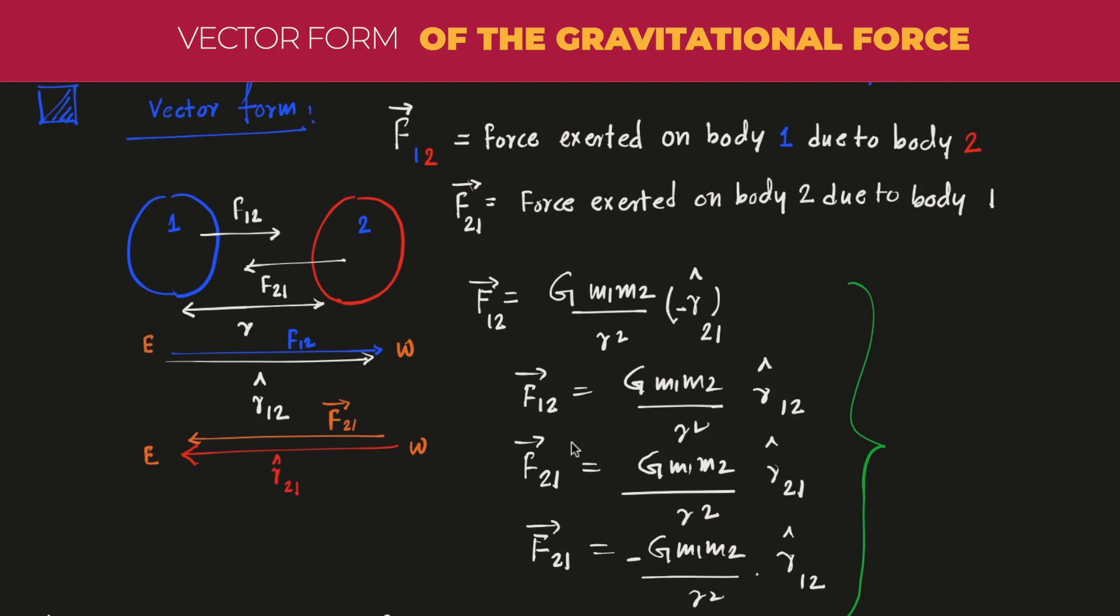So F12 and F21, they are basically opposite to each other, and this opposition is offered by the two unit vectors. One is working along from one to two, or from east to west, and another unit vector which is basically working from west to east.